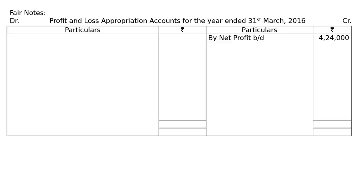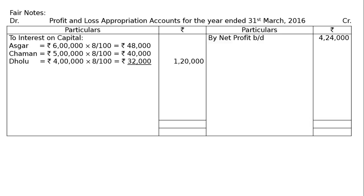We can proceed with the sum now. Preparation of profit and loss appropriation account for the year ended 31st March 2016. By net profit brought down, it is given in the question as Rs. 4,24,000. We proceed now to interest on capital for Oskar, Chaman and Dholu. The total capital stood at Rs. 14,00,000.